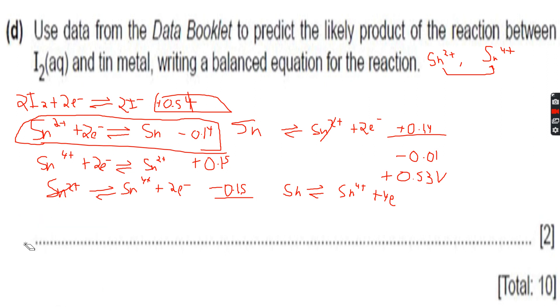This will become four, this will become four, then four electrons will cancel out, and the overall reaction that we will have will be 2I2 plus Sn gives Sn4+ plus 4I-.